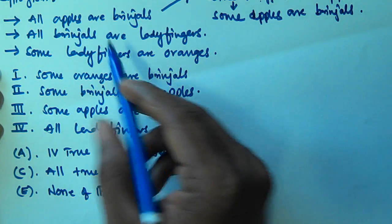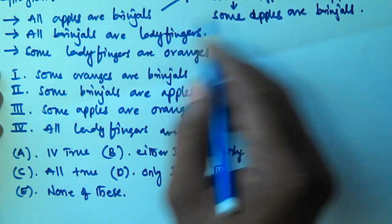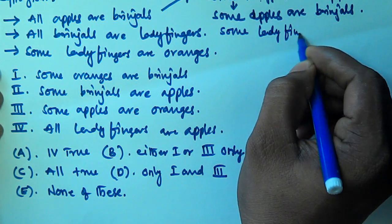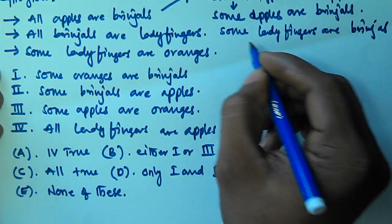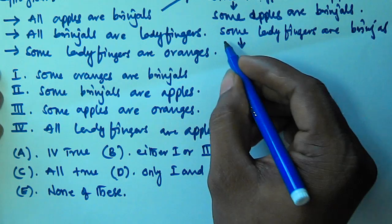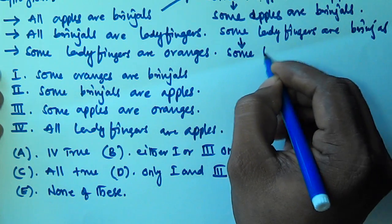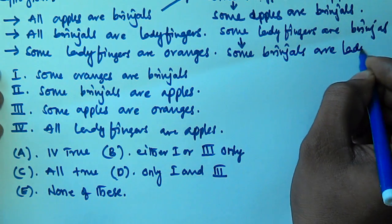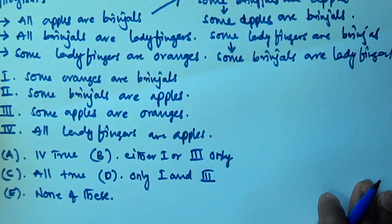Again from Statement 2 — All brinjals are ladyfingers — when I interchange brinjals and ladyfingers, all becomes some. So that means Some ladyfingers are brinjals. And again from this, since some is there in syllogism, I can interchange ladyfingers and brinjals. So from this I can derive Some brinjals are ladyfingers.